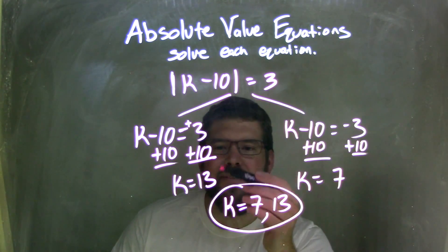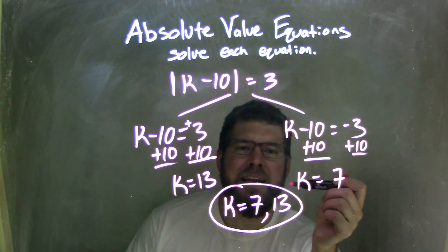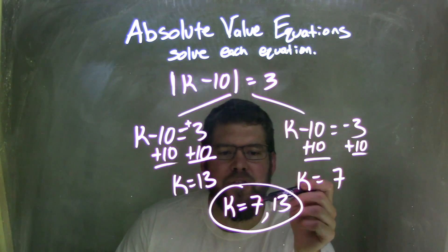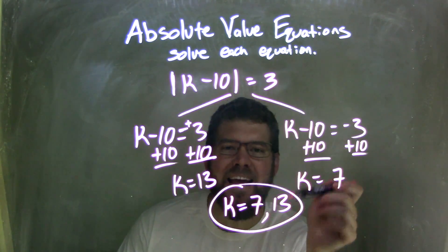Because 3 plus 10 is 13, and negative 3 plus 10 is a positive 7. When I wrote my final answer, I wrote it in increasing order, right? 7 and 13. So our final answer here is k equals 7 and 13.